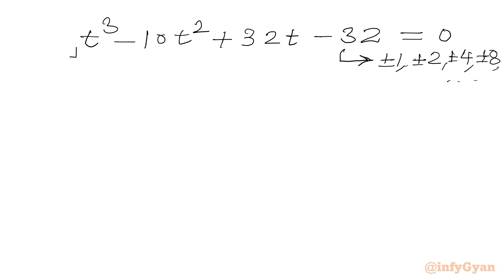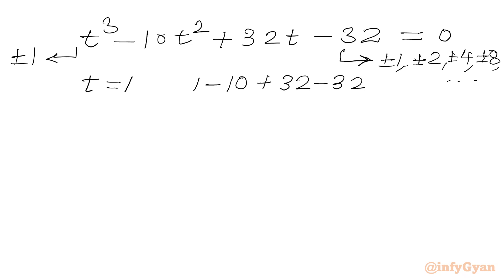The leading coefficient is 1, so we write plus or minus 1. We consider the ratio of constant to leading coefficient factors. Plugging in t equal to 1: 1 cubed is 1, minus 10 times 1 squared is 10, plus 32 times 1 is 32, then minus 32. This sum is not coming out to 0, so t cannot equal 1 for our cubic equation.